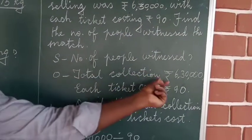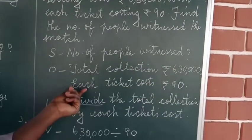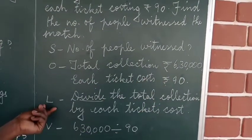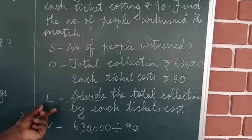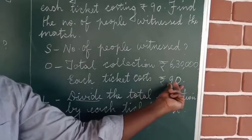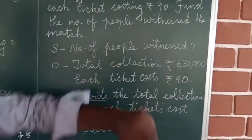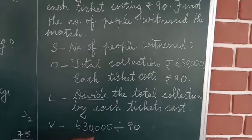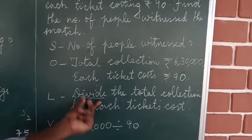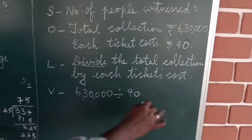O — organize the data: total collection Rs. 6,30,000; each ticket cost Rs. 90. L — line up an action plan: when I divide the total collection by the cost of each ticket, I will be able to find the total number of people who went to see the match. So I am going to choose the operation of division: 6,30,000 divided by 90.